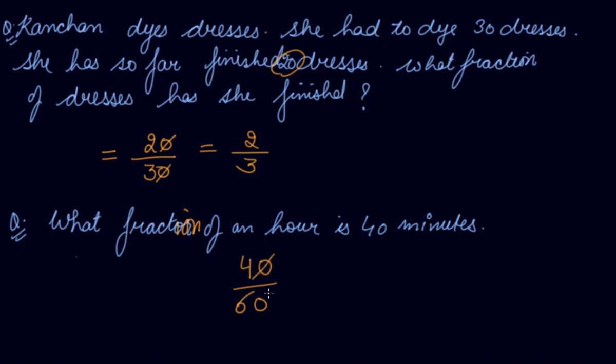Again, we can cancel out the zeros. 4 and 6 can both be divided by 2. The common factor is 2. So, 2 and 3. The simplified fraction is 2 by 3.